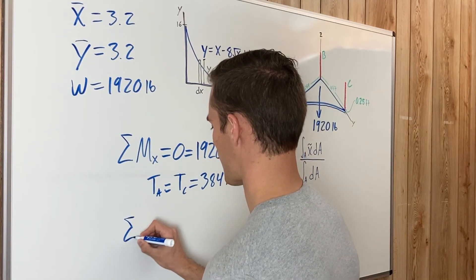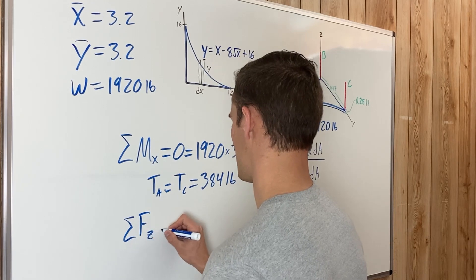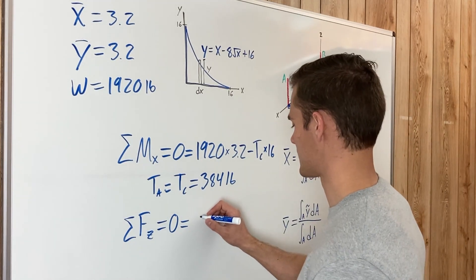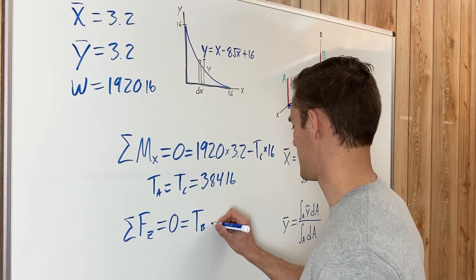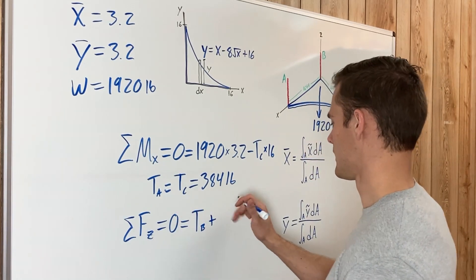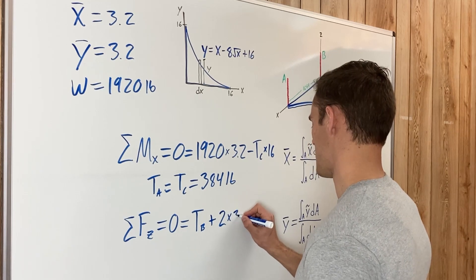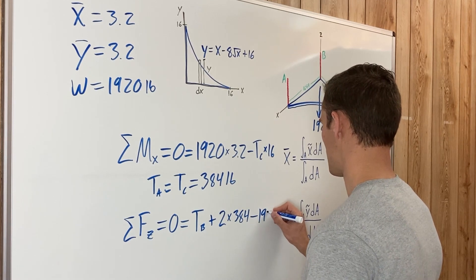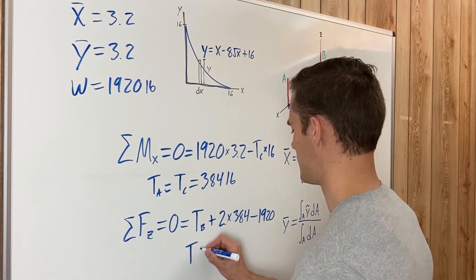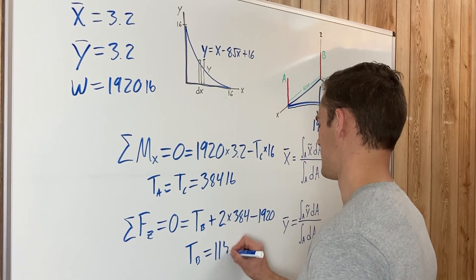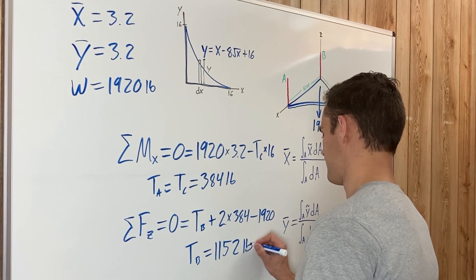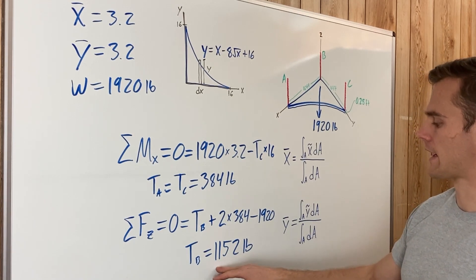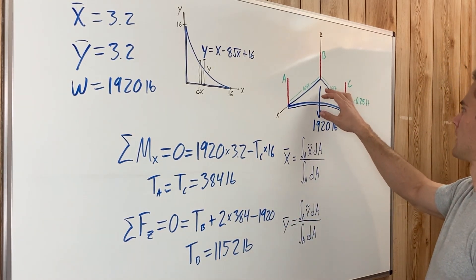Summing forces in the z direction equals zero: Tb + Ta + Tc − 1920 = 0. Substituting Ta = Tc = 384: Tb + 2(384) = 1920. Solving, Tb = 1152 pounds. That cable takes much more of the weight because it is much closer to the centroid.